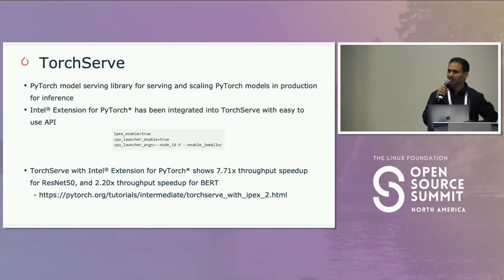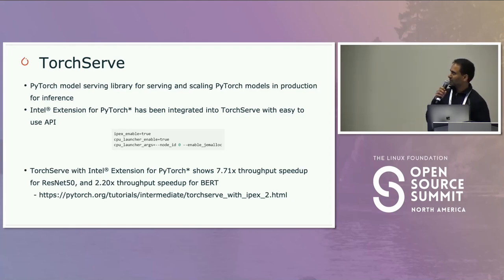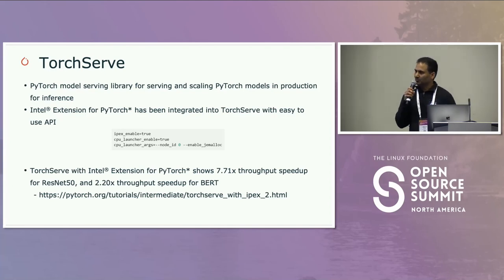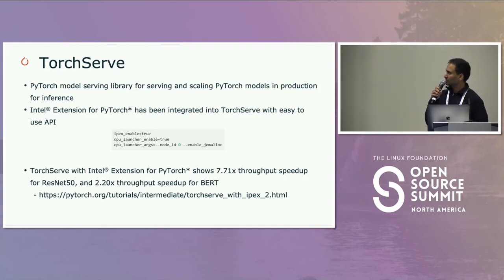We also work closely with the TorchServe team at Meta and other contributors. We've enabled Intel Extension for PyTorch, the IPEX launcher, and upstream PyTorch optimizations get picked up. Enabling this in TorchServe is a single line of code change: ipex_enable=True. For the launcher, you can similarly enable it in config.properties for TorchServe. We did benchmarking on a couple of models for TorchVision and NLP, seeing 7.7x performance and 2.2x performance respectively. You should expect similar performance improvements across a wide set of models in the TorchServe repository.